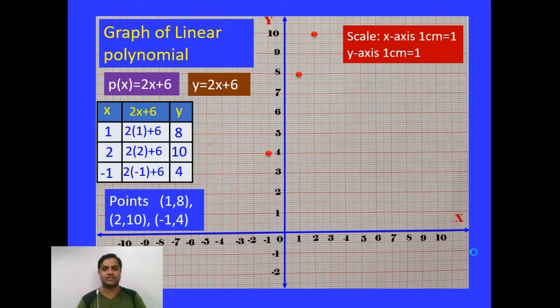Now by joining these three points with the scale, we will get one straight line. This is the graph of a linear polynomial.